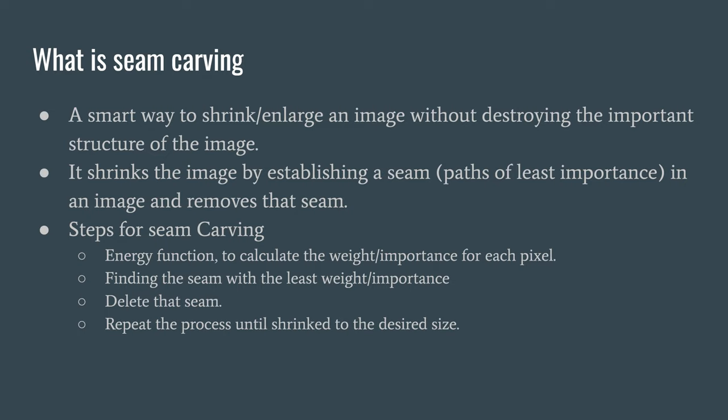It shrinks the image by establishing a seam, which is a path of the least important pixels, and then it removes that seam. The steps for seam carving are: first, we need an energy function to calculate the weight or the importance of each pixel, and then we find the seam with the least weight. We delete that seam and repeat the process until we shrink the image into the desired size.